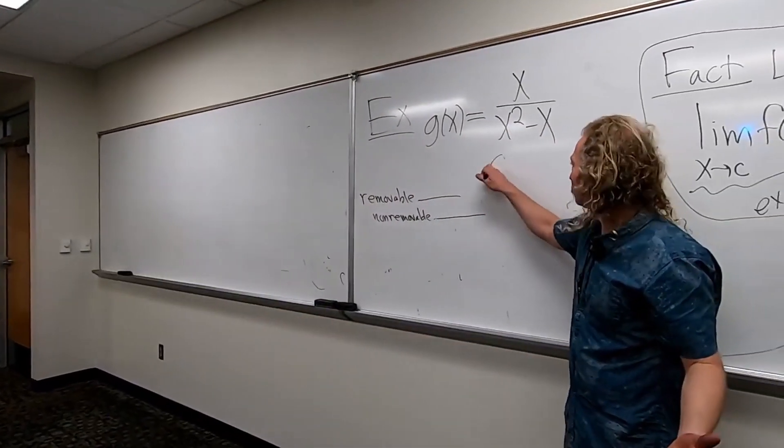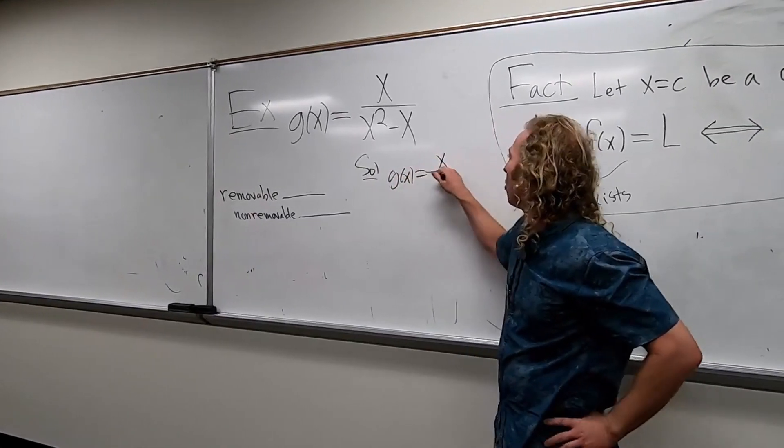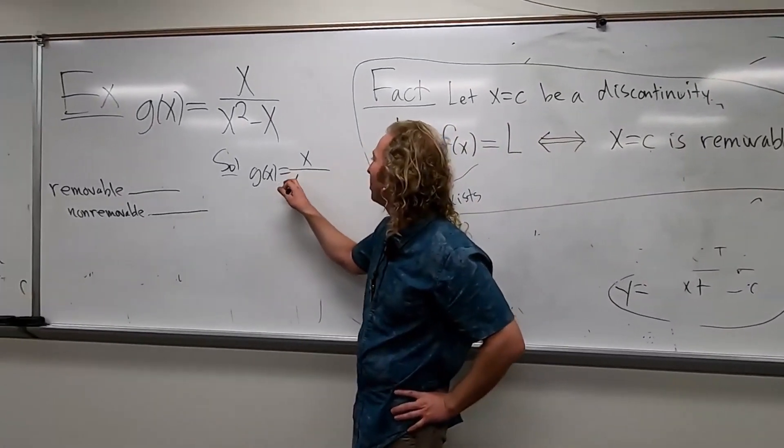So the bottom should factor, right? So solution. We have G of X equals X. What can we pull out in the bottom? An X. Yeah. It makes it a little bit different. It makes it a little bit weird.